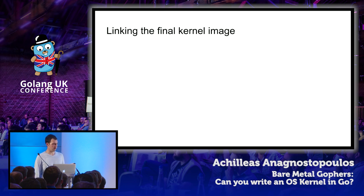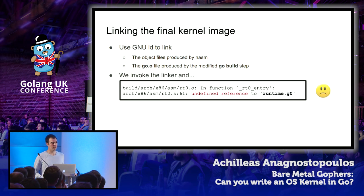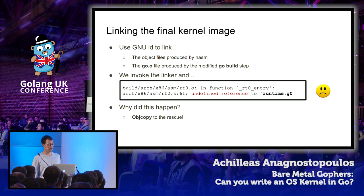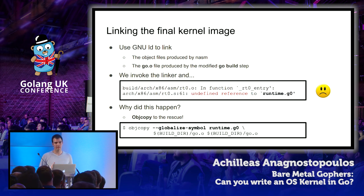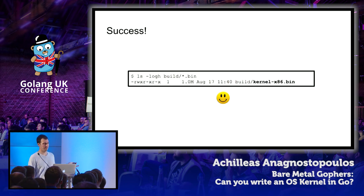For the custom link step, we use GNU-LD passing object files from our NASM assembly bootstrap code and the go.o file produced by the modified build step. We invoke the linker with our linker script, but initially get an error about undefined symbols. The Go linker flags all symbols in the go.o file as private, making them invisible to other object files. We use the 'objcopy' tool from the binutils package to globalize the problematic symbol, write it back to the same file, then re-run the linker command to produce our final kernel image, which we package into a bootable ISO and launch in VirtualBox.